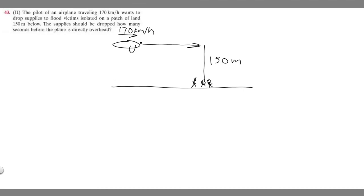In this problem we're told the pilot of an airplane traveling 175 kilometers per hour wants to drop supplies to flood victims isolated on a patch of land 150 meters below. The supplies should be dropped how many seconds before the plane is directly overhead?